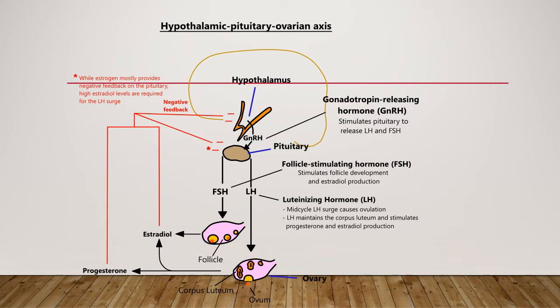Progesterone and estrogen have a short feedback on the release of LH and FSH and a long feedback on GnRH release.